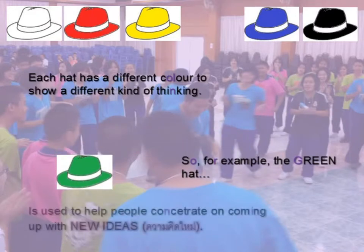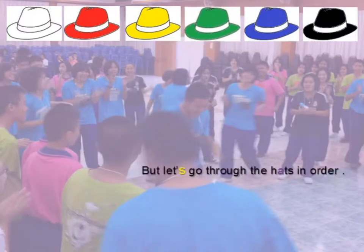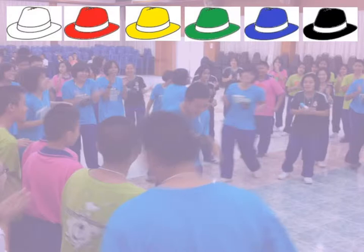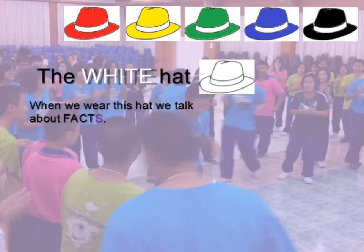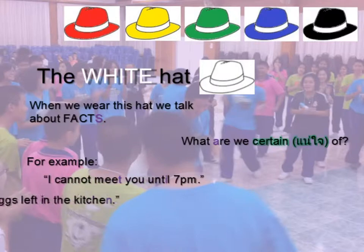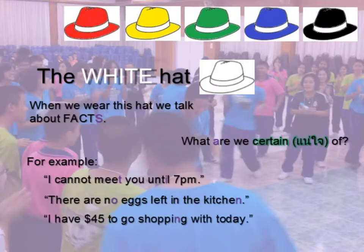The green hat, for example, is used to help come up with new ideas. Let's go through the hats in order as shown here. The white hat is used when we talk about facts — what are we certain about? For example: I can't meet you till 7 p.m., there are no eggs left in the kitchen, I have $45 to go shopping with today. These are white hat statements.